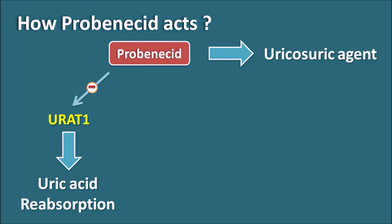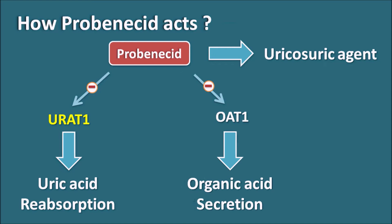At the same time, Probenecid can also inhibit another pump — the OAT-1 pump, the organic anion transporter 1 pump. This OAT-1 pump is responsible for organic acid secretion, so that organic acids can be secreted into the renal tubules. Probenecid inhibits both the URAT-1 pump and the OAT-1 pump, thereby inhibiting both uric acid reabsorption and organic acid secretion.